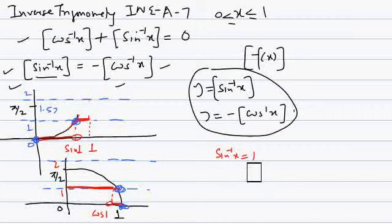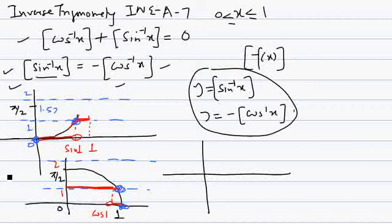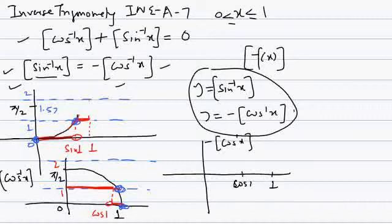Now we draw minus greatest integer of cos inverse x, which is the reflection of the cos inverse x greatest integer graph in the x-axis. The area between cos 1 and 1 remains at 0, but between 0 and cos 1 it becomes negative — it becomes minus 1.